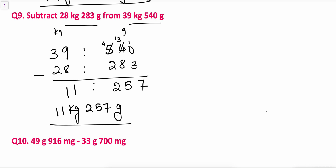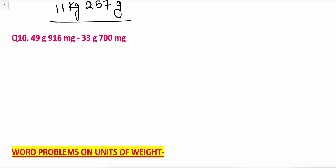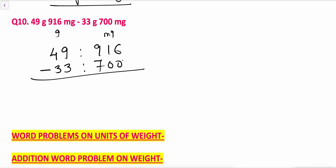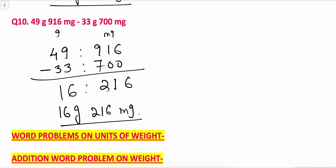Now one more subtraction example: 49 grams 916 milligrams minus 33 grams 700 milligrams. Starting from the right: 6 minus 0 is 6, 1 minus 0 is 1, 9 minus 7 is 2, 9 minus 3 is 6, 4 minus 3 is 1. The answer is 16 grams 216 milligrams. This is the subtraction.